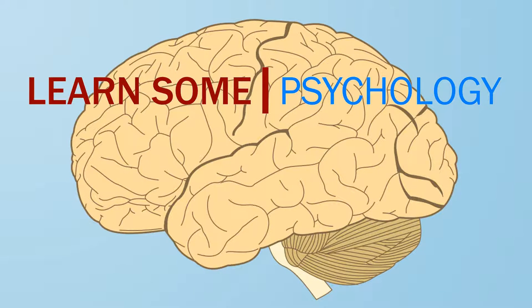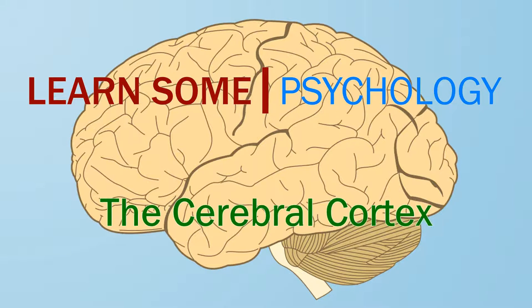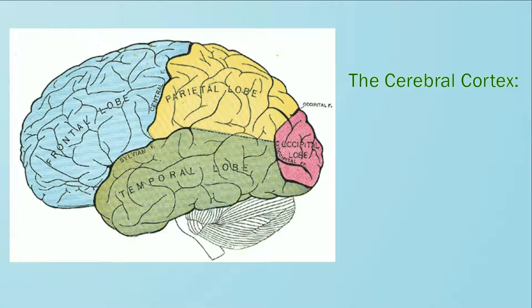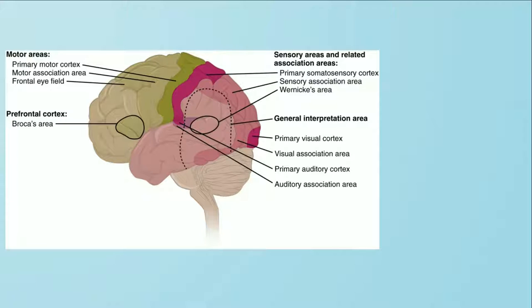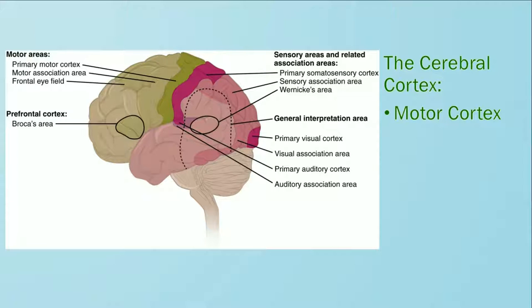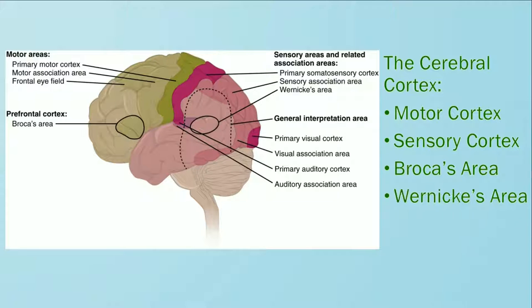Welcome to Learn Some Psychology. I'm Mrs. Daniel. In this video, we're going to learn about the locations and functions of the structures in the cerebral cortex, including the frontal lobes, parietal lobes, temporal lobes, and occipital lobes. We will also learn some more specific areas within the cerebral cortex, including the motor and sensory cortexes, Broca's area, and Wernicke's area.